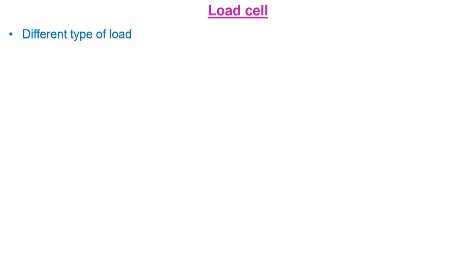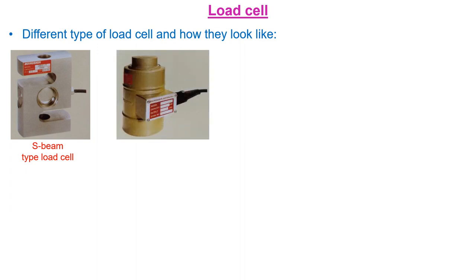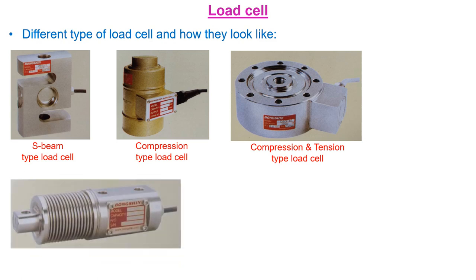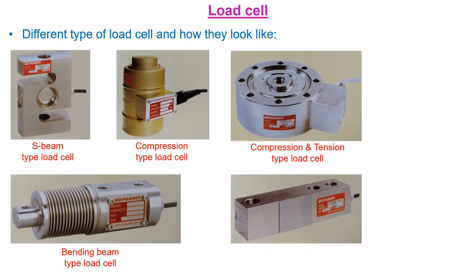Nowadays a variety of load cells are available for industrial applications. The first one is S-beam type load cell. The second one is compression type load cell. The third one is compression and tension type load cell. The next one is bending beam type load cell. The fifth one is shear beam type load cell. And the last one is tension type load cell.